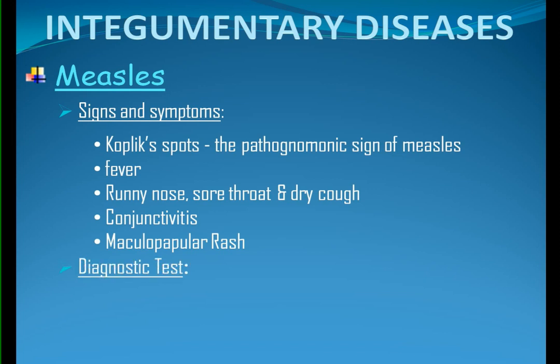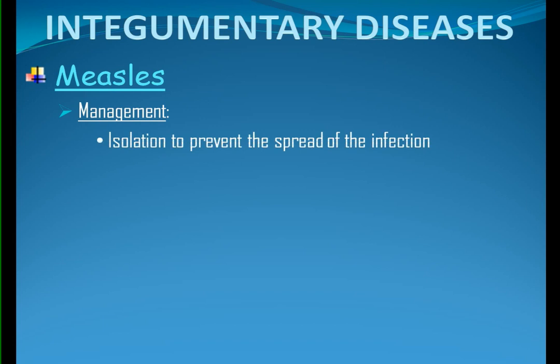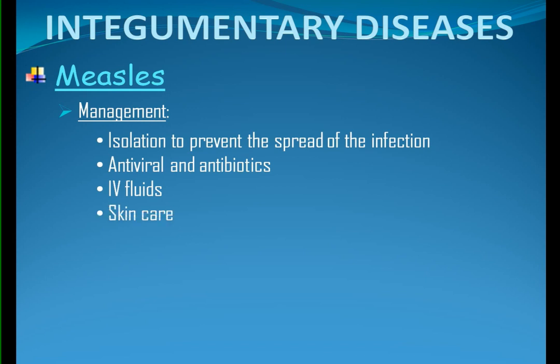Diagnostic tests. Nose and throat swab together with blood exam are done to measure measles-specific immunoglobulin M, or IgM. The result will be positive for up to 6 weeks after the start of the disease. Management: first is isolation, to prevent the spread of the infection. Antiviral and antibiotics, IV fluids, skin care, and nebulization if necessary.